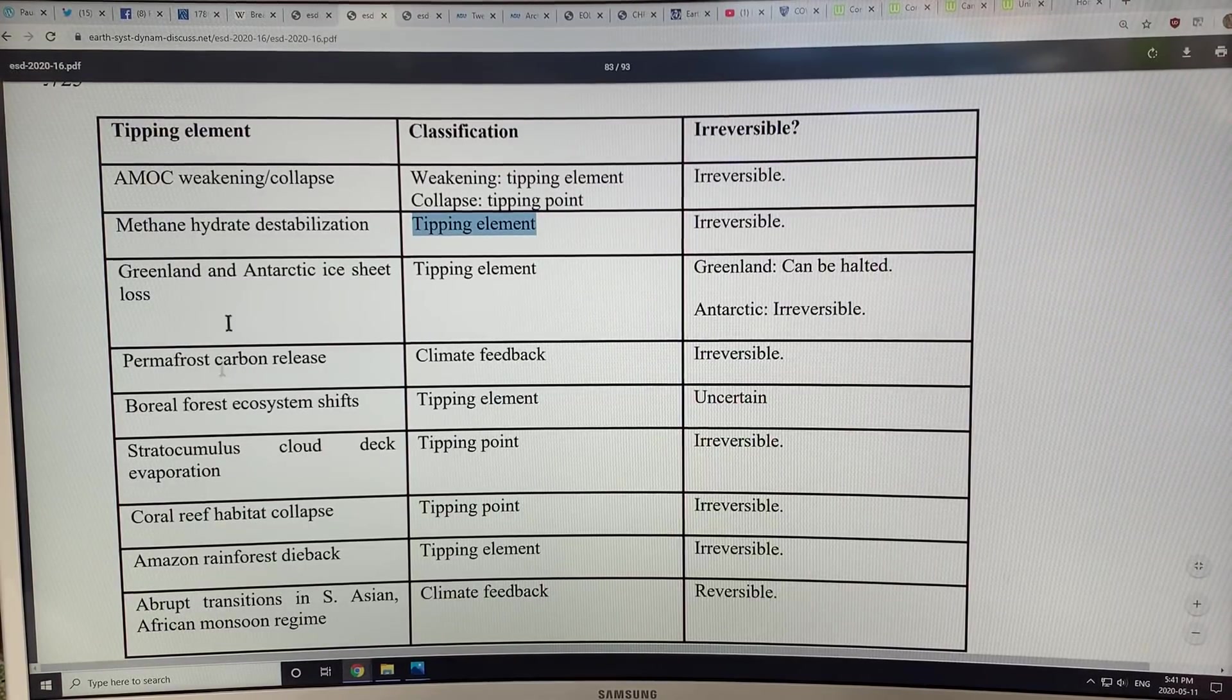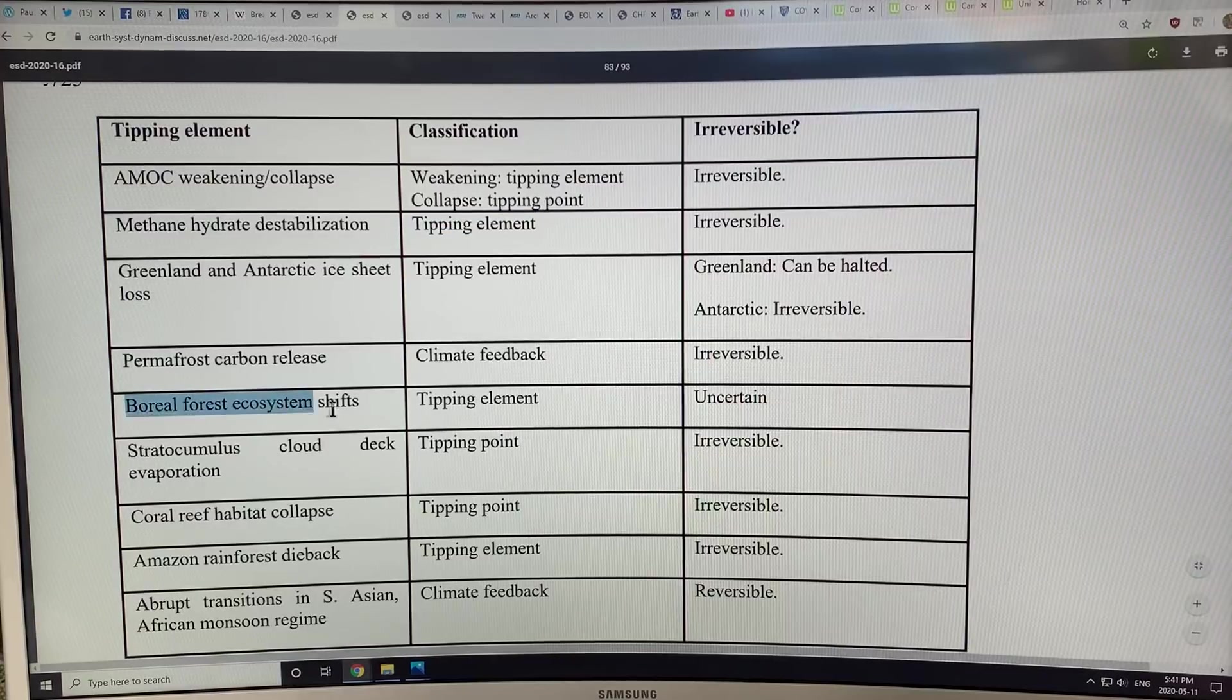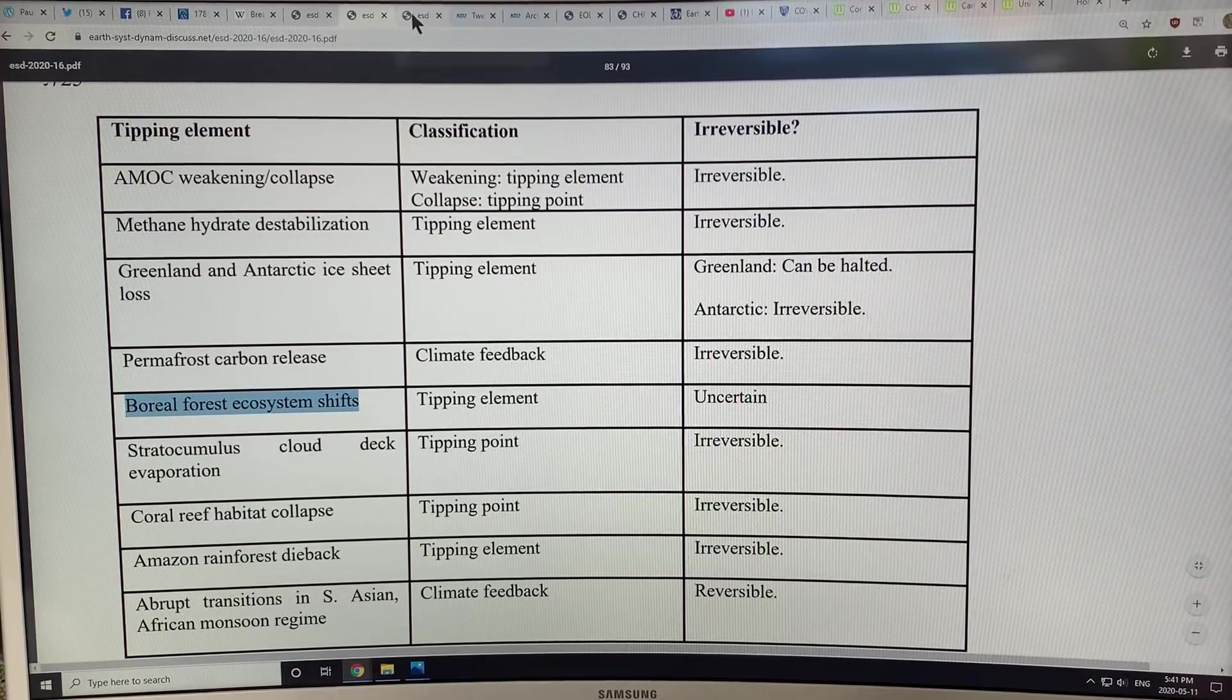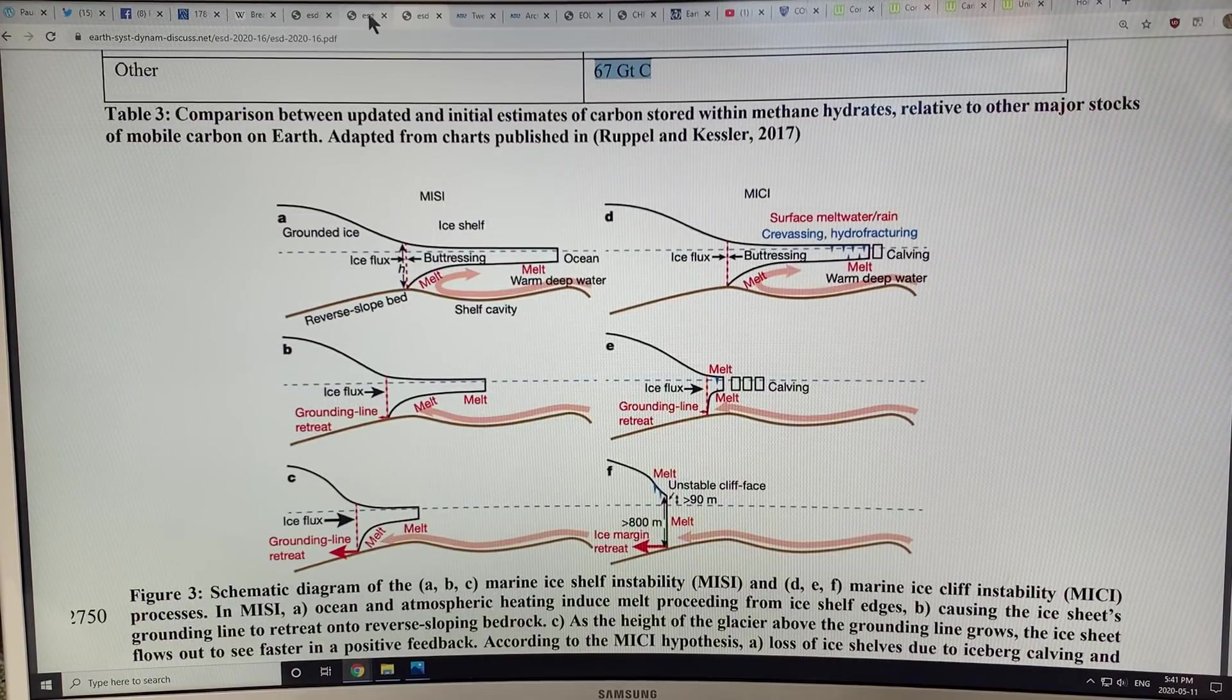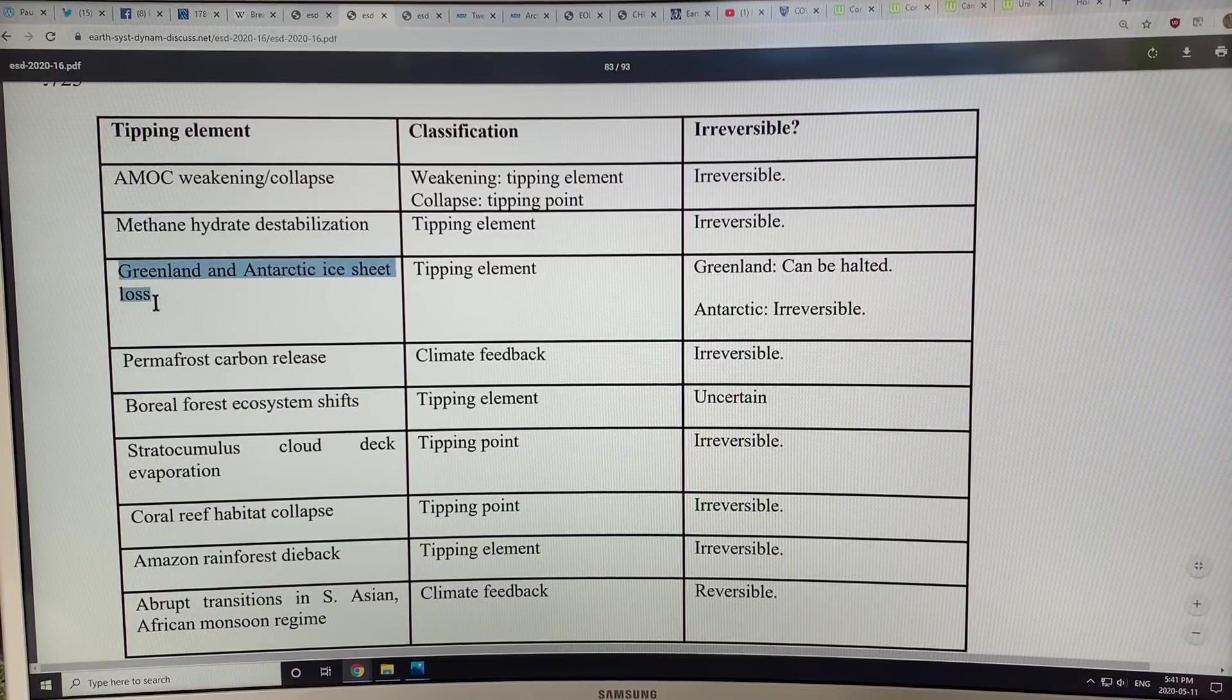Another tipping element is the boreal forest ecosystem shifts. But before I get there, we have the Greenland and Antarctic ice sheet loss.